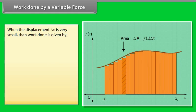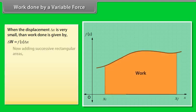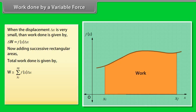Work done by a variable force. When the displacement delta x is very small, then work done is given by delta w equals fx delta x. Now adding successive rectangular areas, total work done by w is approximately equals to summation from initial position xi to final position xf of product of fx and delta x. By adding the areas of all the rectangles, we find that for delta x tends to zero, the area under the curve is exactly equal to the work done by fx.